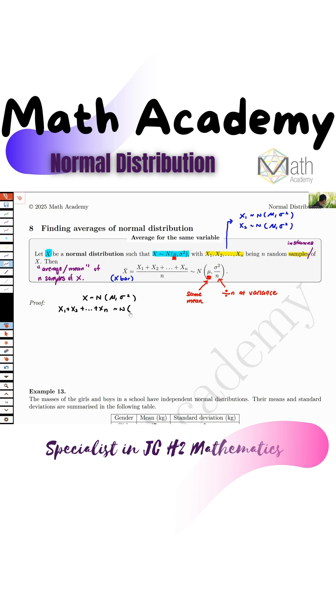When you add up n different objects, what do we know about the mean and variance? It will times n to both. We don't square. That's what I want to say.